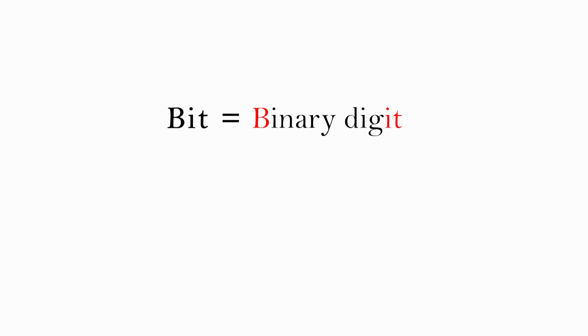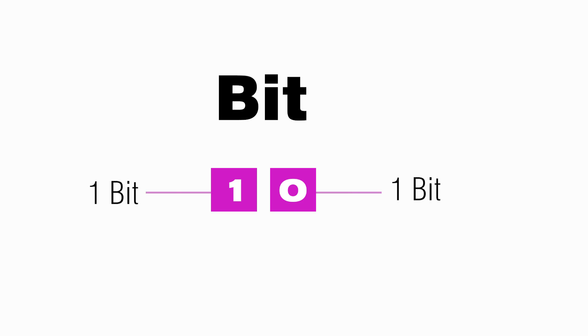A bit is a binary digit — it is the smallest unit of data that a computer uses. It can be used to represent two states of information, such as one or zero. Computers use the binary number system to manipulate and store all of their data, including numbers, words, videos, and music.